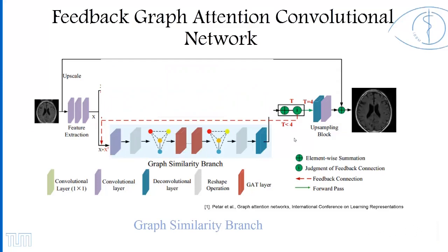Moving to the graph similarity branch: it employs existing graph attention network layers (GAT) to make use of contextual information among image patches to help recover structure and remove artifacts. For the GAT layers, each node is connected with five neighboring nodes, and the attention coefficient of each node is updated. The attention coefficient represents the importance of a neighboring node to the key node.